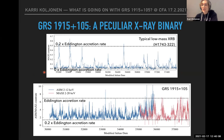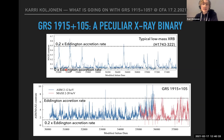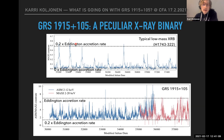Typically in outbursts from low-mass X-ray binaries, the source starts at very low accretion rate and X-ray luminosity, rapidly rises to about 20 percent of the Eddington accretion rate, then decays back to quiescence. But looking at the X-ray light curve of 1915, we see that essentially all the lifetime of RXTE's ASM and MAXI on the ISS, the source is accreting at 20 percent Eddington up to Eddington or even super-Eddington accretion rates — we are just sitting at the top of the outburst.